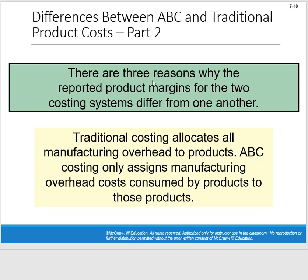First, there are three reasons why reported product margins for the two costing systems differ from one another. The first reason is that traditional costing allocates all manufacturing overhead to products, whereas ABC costing only assigns manufacturing overhead costs actually consumed by those products. So again, it's focused on cause and effect.